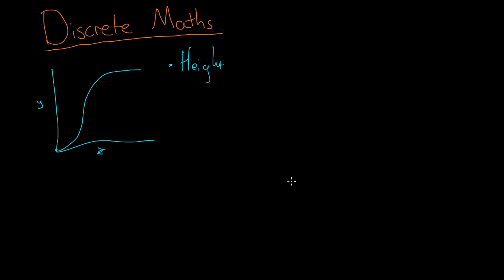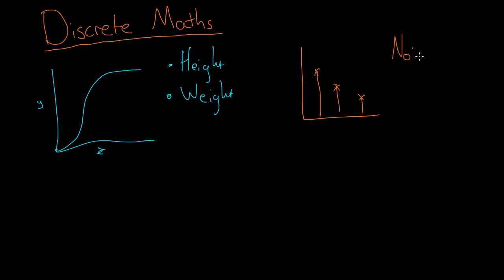And the same with weight — you can be any reasonable weight between a certain range of values. But discrete maths deals with set values, things which are usually just whole numbers. So they deal with things in real life like the number of children in a class. Because you can't have half of a child, you can only have 3 or 4 or 5 kids. Same with letters in a word — you can't have half of a letter. So discrete mathematics deals with these set whole number values.